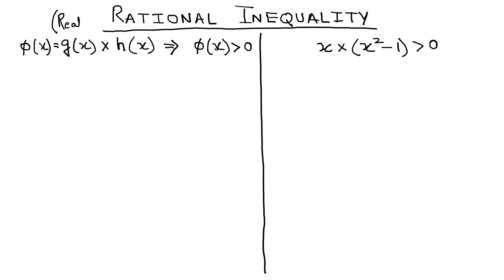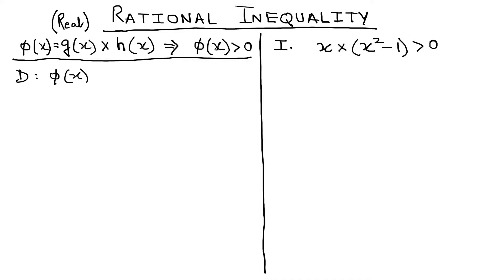I am dividing this session into two parts: on the left-hand side of the screen I will discuss the theory, and on the right-hand side I will discuss an example. I have taken a function φ(x) which is a combination of two functions g(x) and h(x), combined by multiplication, and we are solving the inequality φ(x) > 0. The first thing we need to do is find the domain of φ(x), which is the domain of g(x) intersected with the domain of h(x).